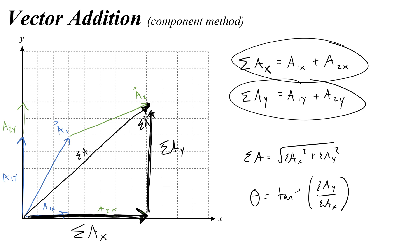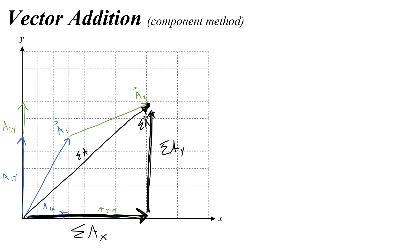So this method is really useful if we have multiple vectors, and it's sort of hard to see how they would add together head to tail. Or if we have vectors that don't lie really nicely on some sort of grid that's pre-drawn for us. And when we're working with the x and the y components of the vectors, what's really helpful is if we basically make a chart, like an x and a y component chart.